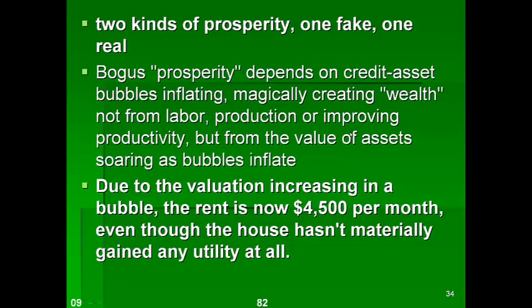For example, in the United States, the valuation of houses has gone up so much because of easy monetary conditions, and now rent is on average about $4,500 a month. But the actual house somebody bought maybe ten years ago does not provide any additional services to people. We call that kind of prosperity fake prosperity.